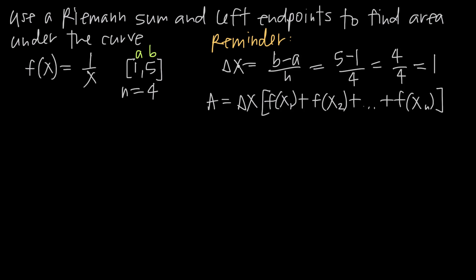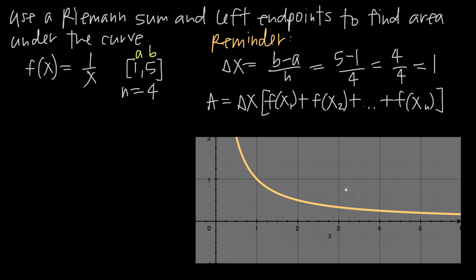That means the width of each rectangle is going to be 1 unit. Let's look at the curve f(x) = 1/x to see what this delta x value really means. Here's the graph of f(x) = 1/x, zoomed in with the origin visible. We have the interval from x = 1 to x = 5, and we're interested in approximating the area underneath this curve between those two green lines, over this interval.